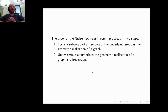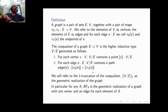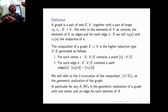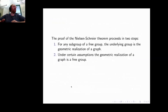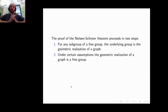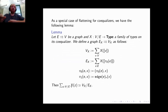The proof of the Nielsen-Schreier theorem in HoTT proceeds in two steps. The first step is to show that any subgroup of a free group is a geometric realization of a graph. The second step is to show that the geometric realization of any graph — under certain assumptions — is a free group. For the first part, regarding the graph definition: edges are directed, with π₀ and π₁ as arbitrary functions, so loops are fine, and this is important for free groups since free groups only have loops.